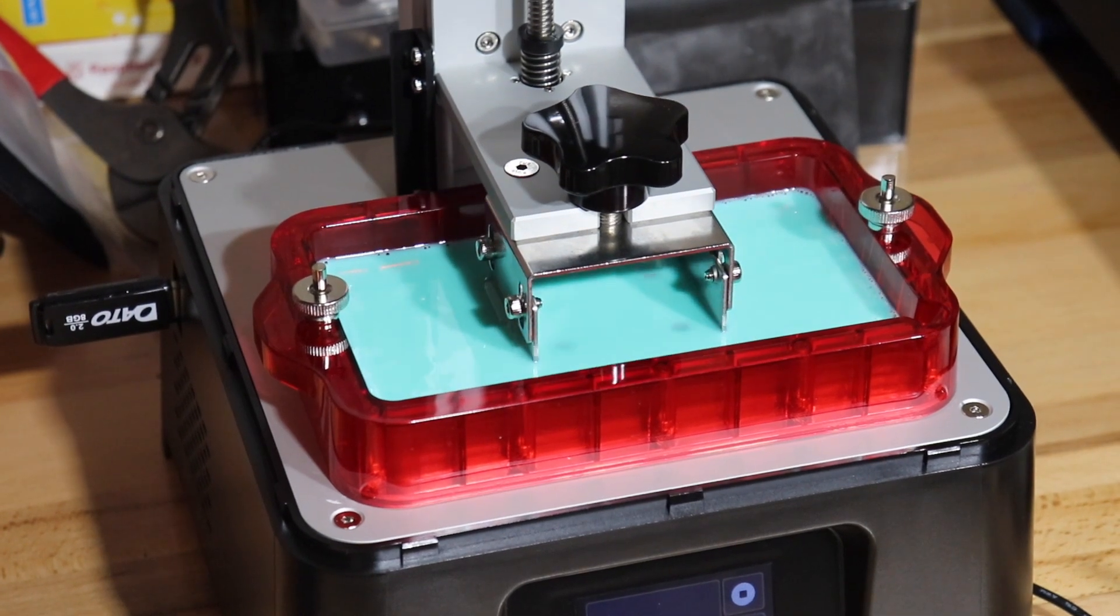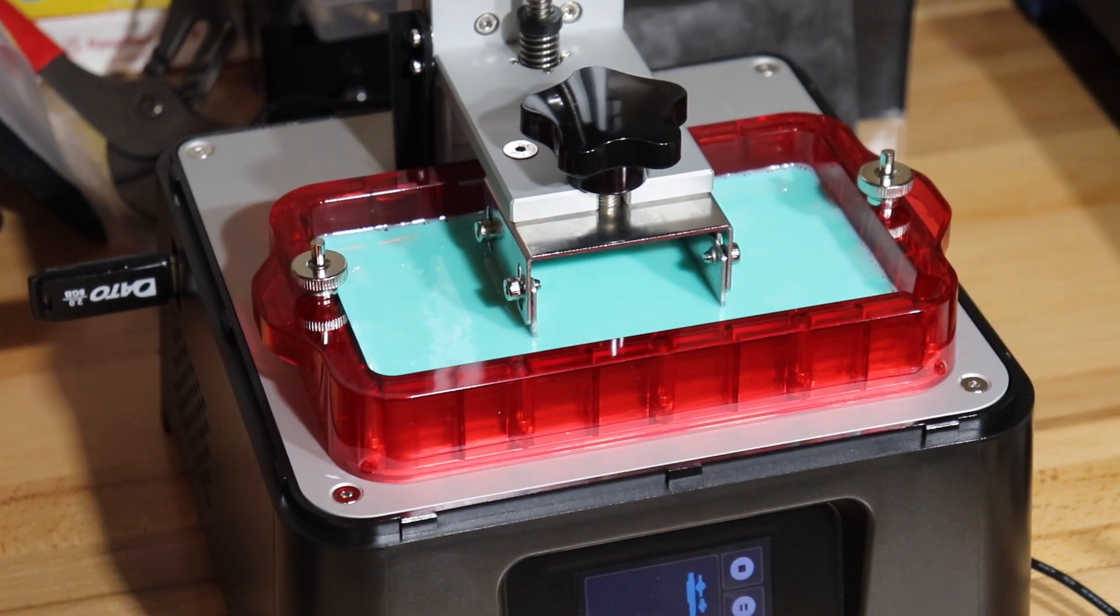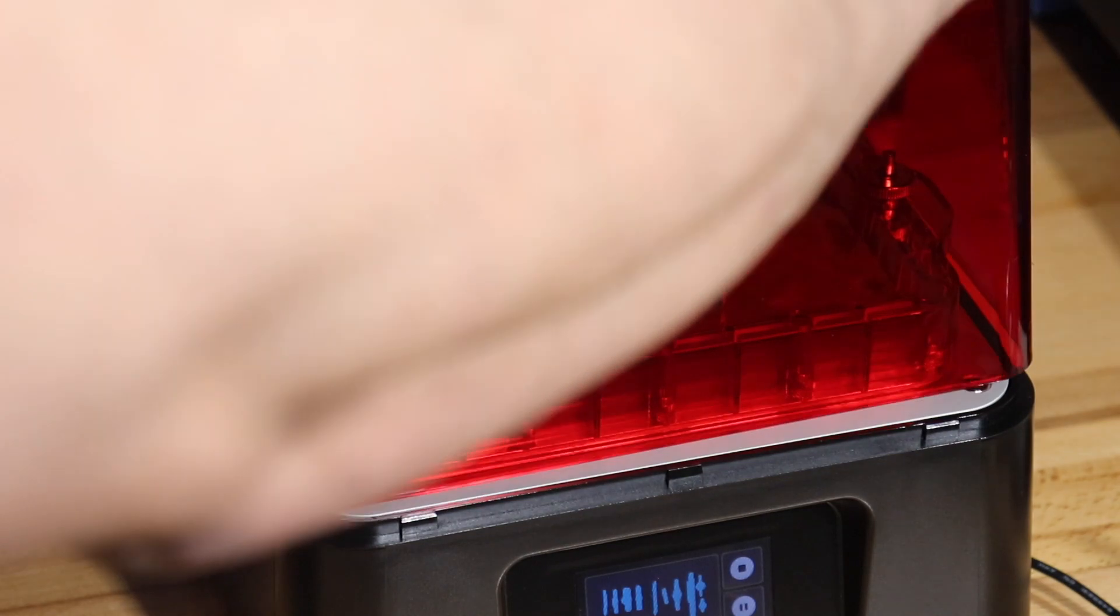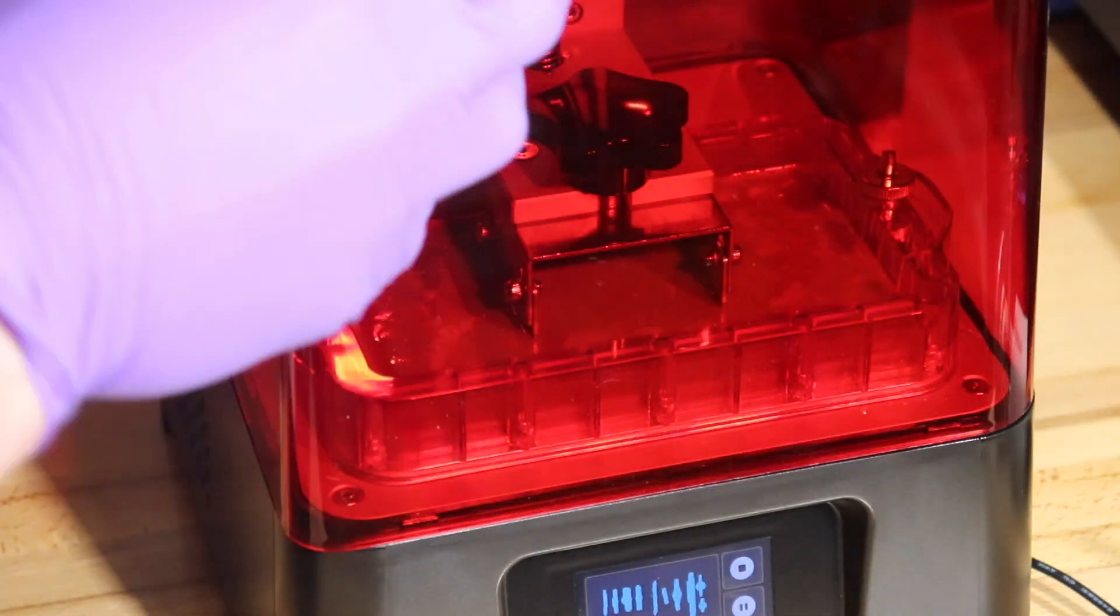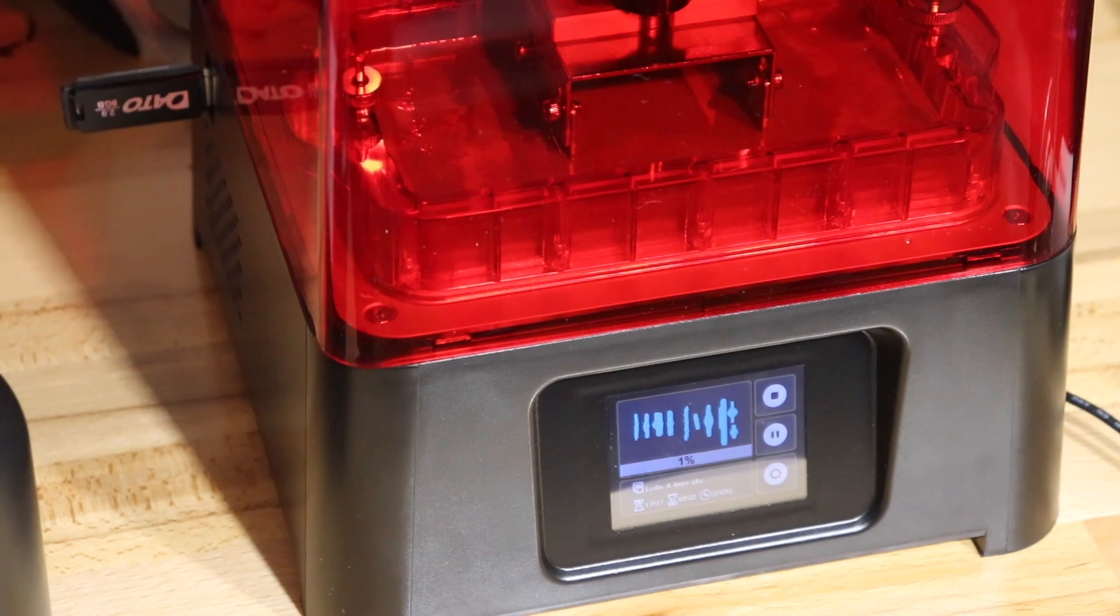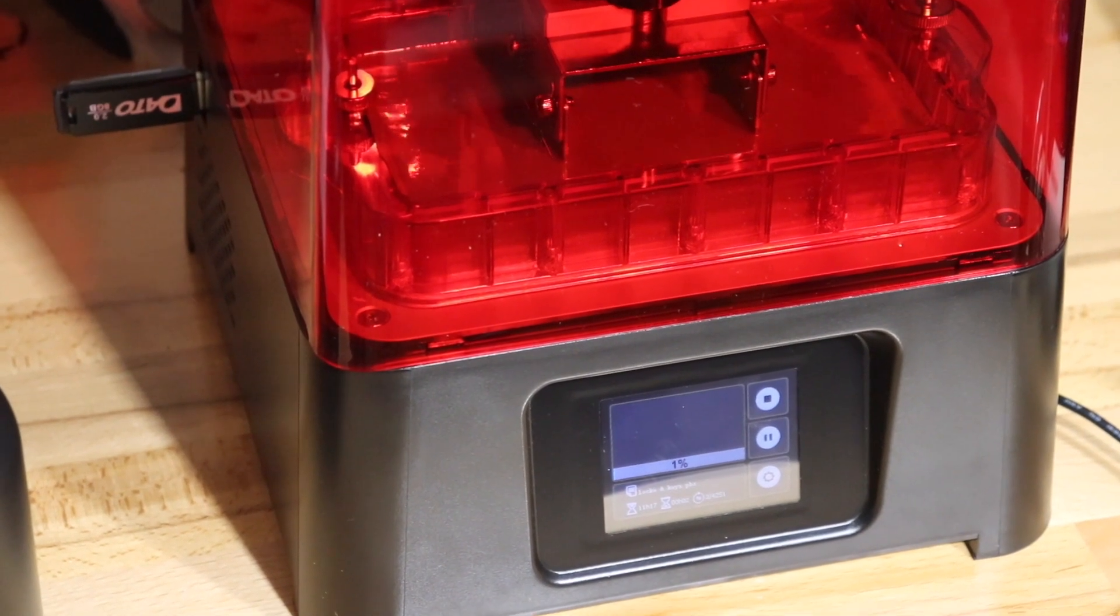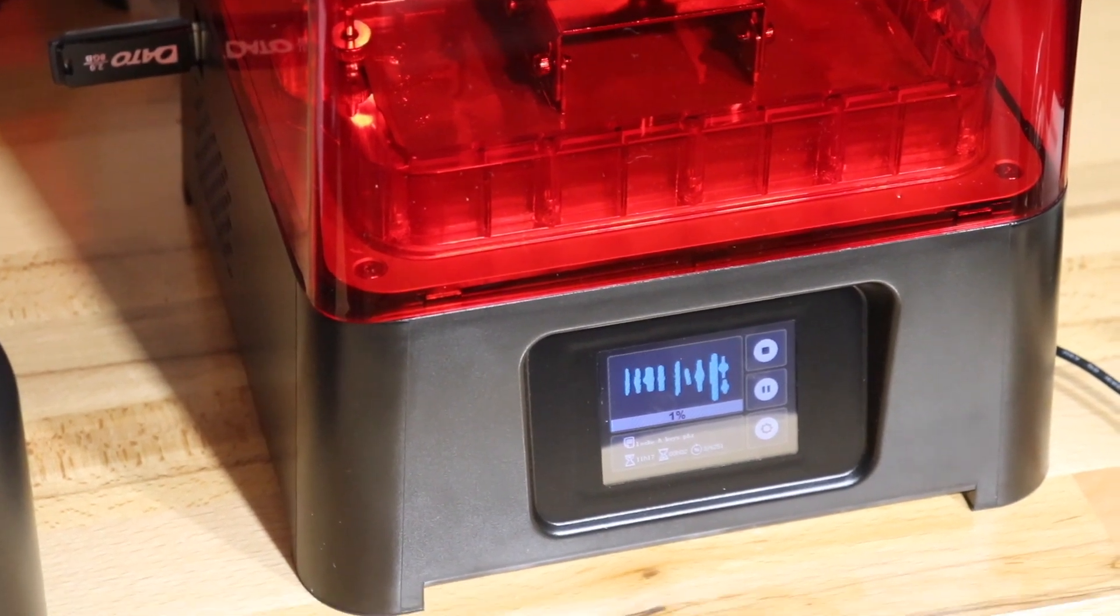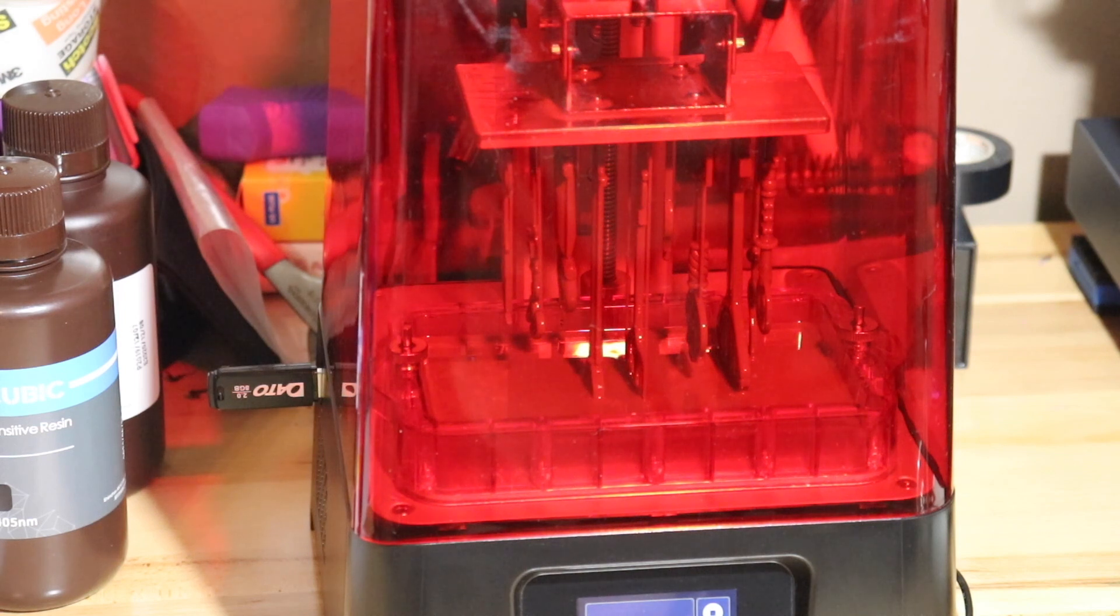I suggest you don't pour too much resin, just enough to cover that build plate. Another negative I have is the build plate doesn't have slopes like some of the other printers or even their other printers in their line. I found a way to do that, you'll see later in the video. The first time I get this print, I spill resin everywhere trying to figure that out.